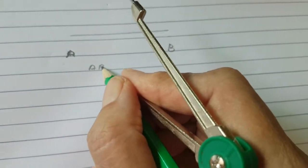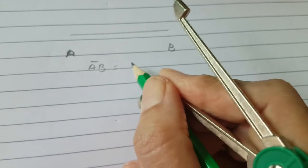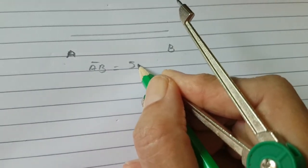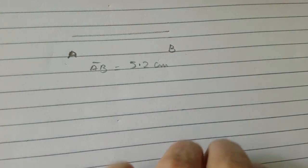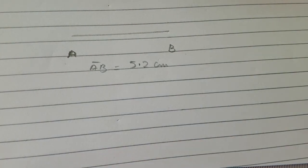The name of line is AB given in the book, so we will name it as AB. AB is 5.2 centimeter. You have to draw the perpendicular bisector of AB, so the half of 5.2 is...